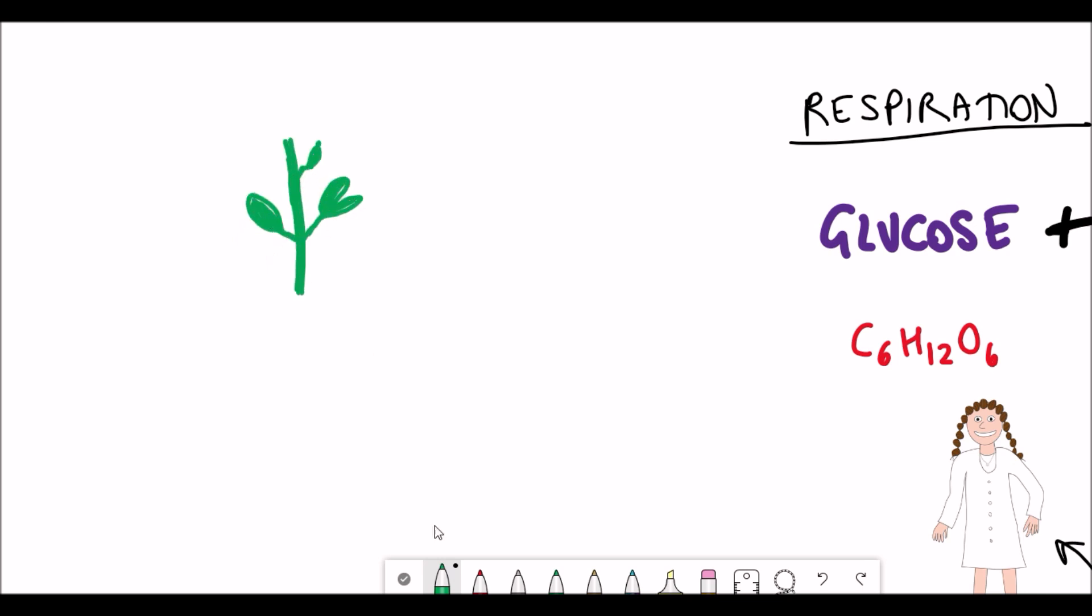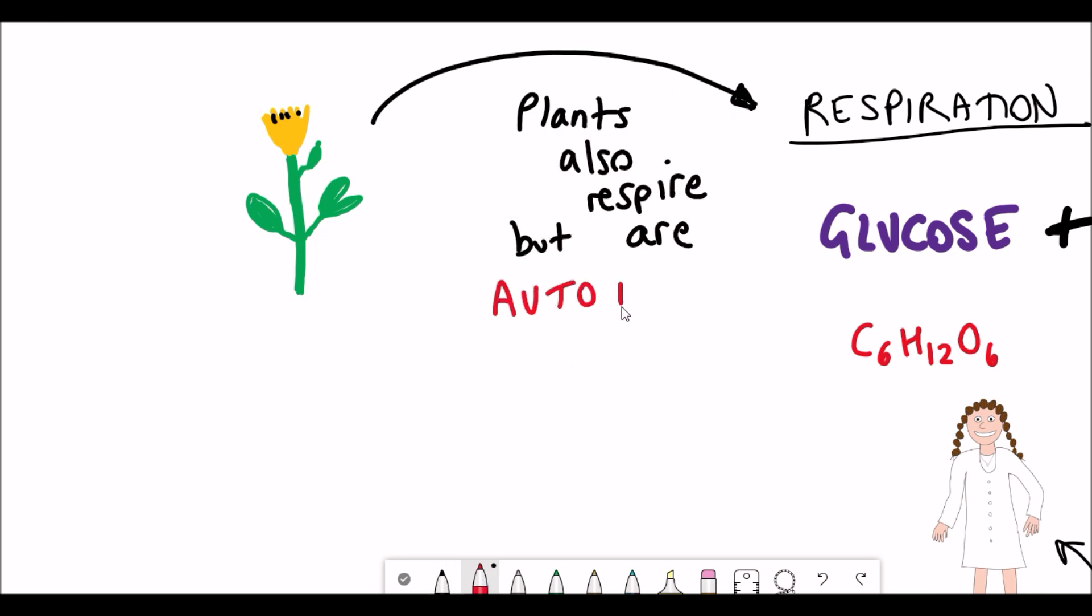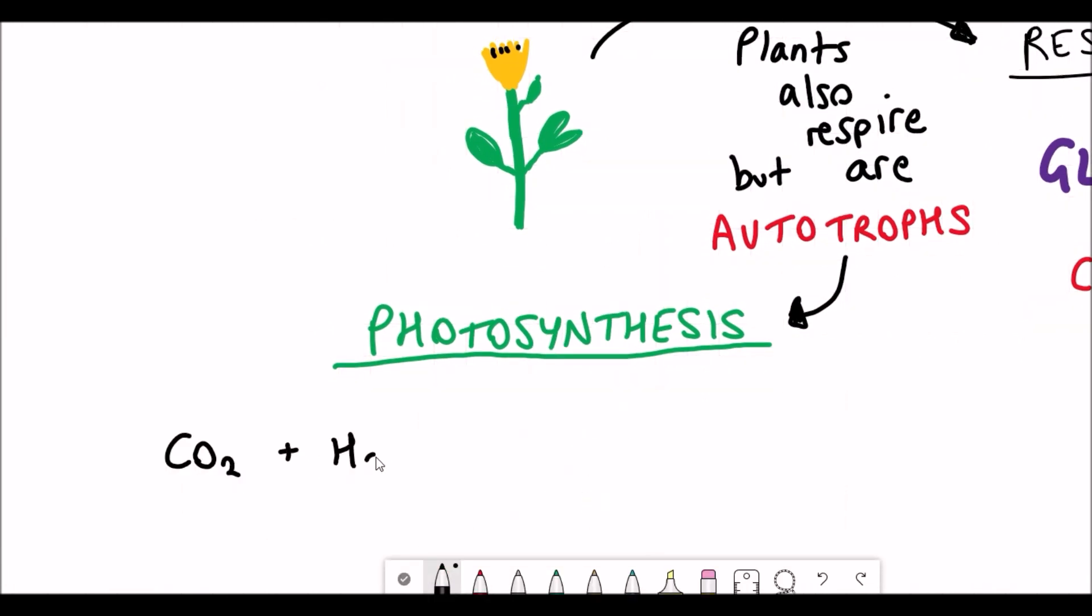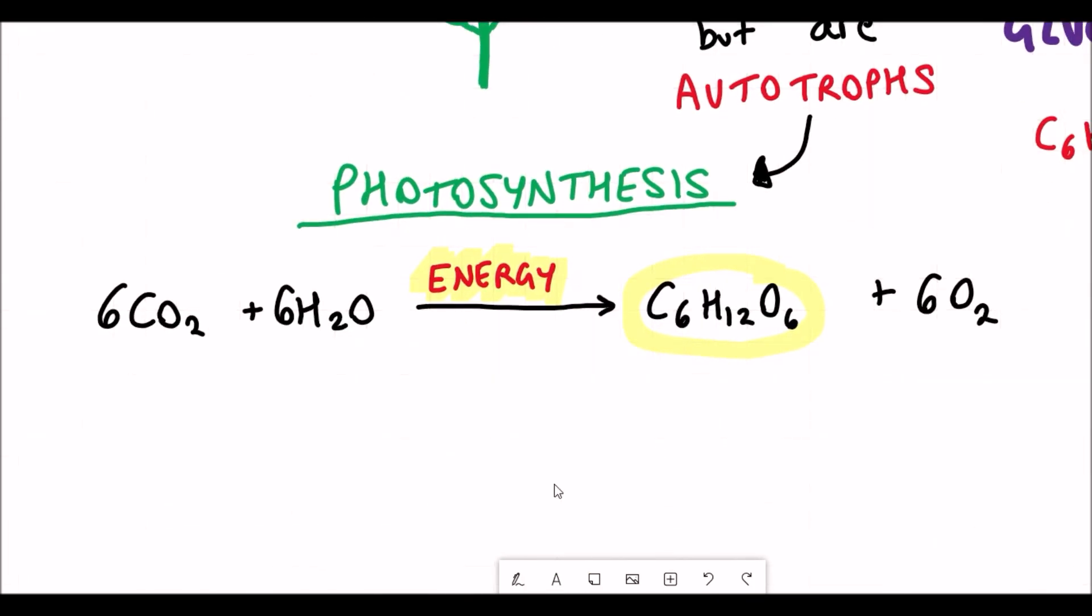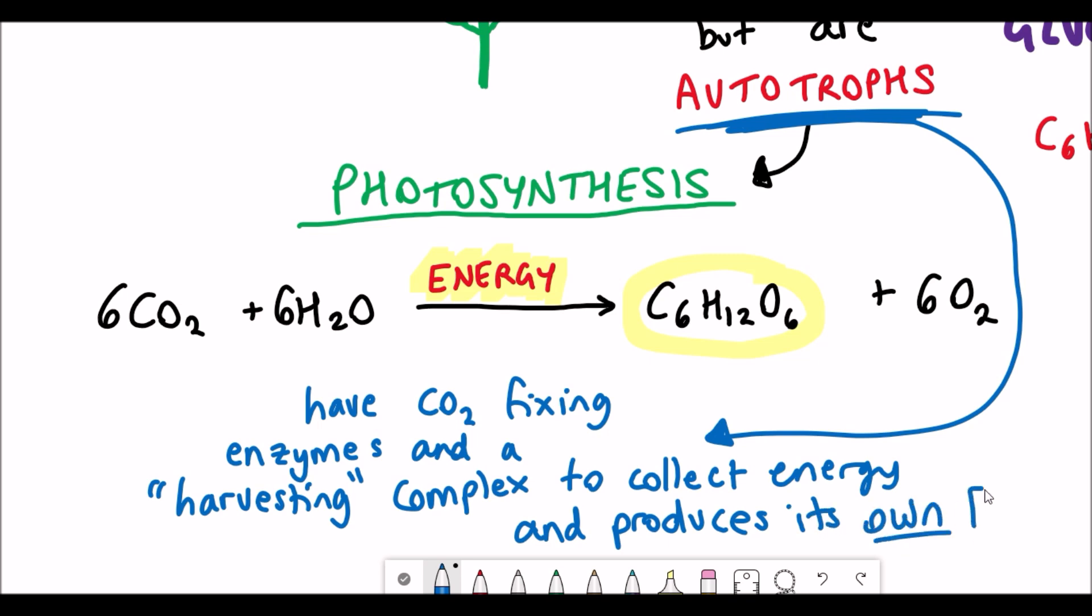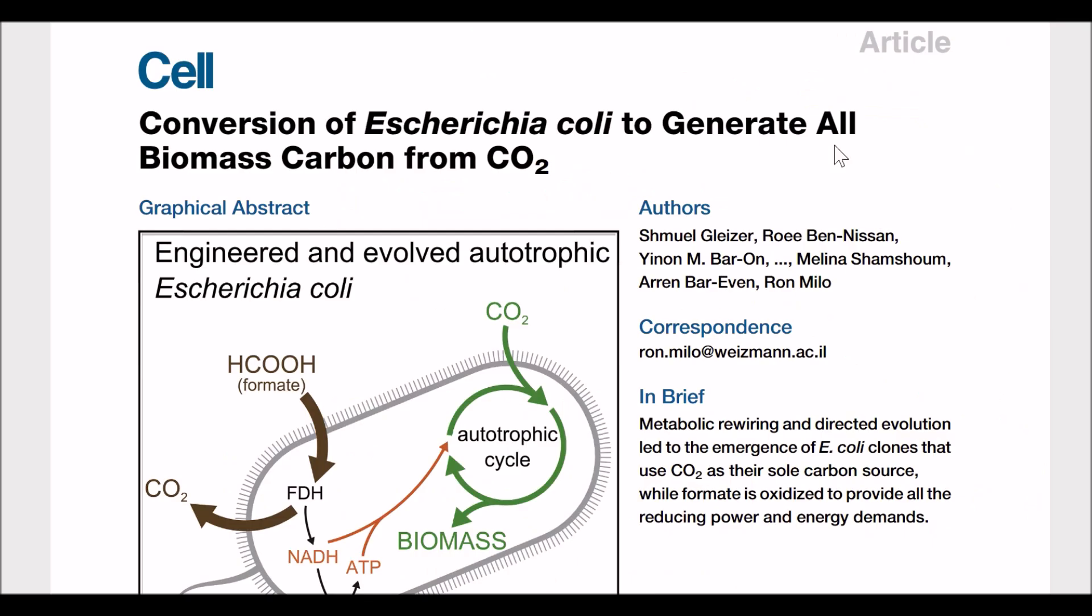But whilst we respire like E. coli, plants also respire as well. However, they aren't heterotrophs. They're instead referred to as autotrophs. What makes plants different is that they undergo photosynthesis and they can use this process to generate their own food. They take carbon dioxide and water and convert this into glucose and release oxygen. But whilst respiration provides energy, the key route to photosynthesis is it requires energy to do the reaction. These autotrophs, these plants, can do photosynthesis because they have carbon dioxide fixing enzymes and they have a harvesting complex that can collect this energy required to carry out this process.